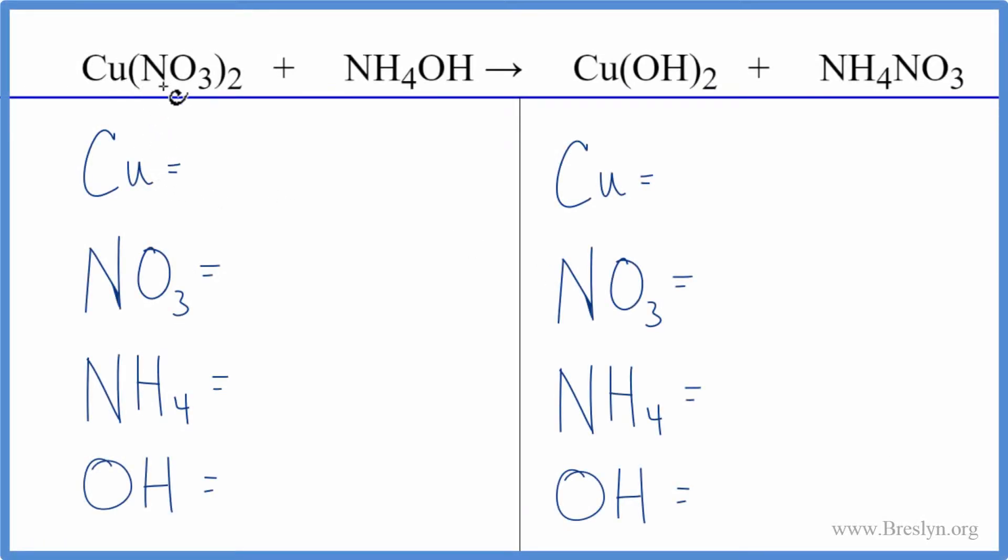In this reaction we have copper two nitrate and ammonium hydroxide. This is a double displacement reaction. The copper and the ammonium, the NH4, are going to switch places. When we balance this, we're going to use a little trick.